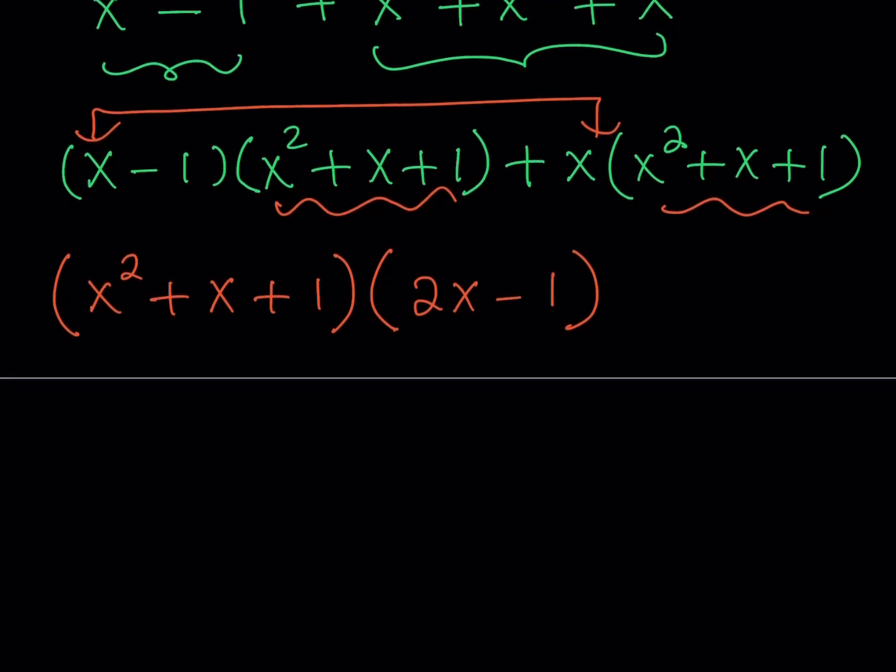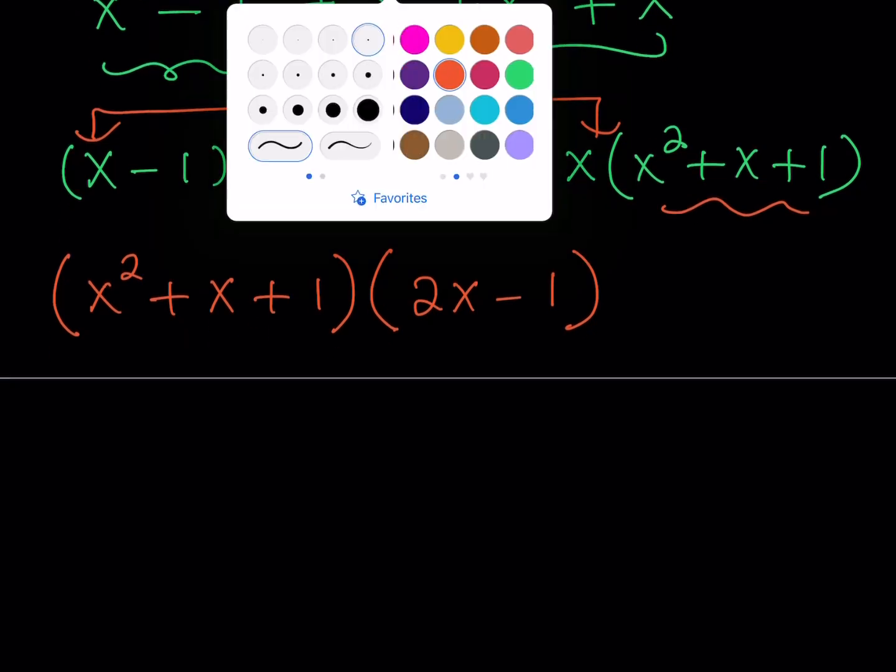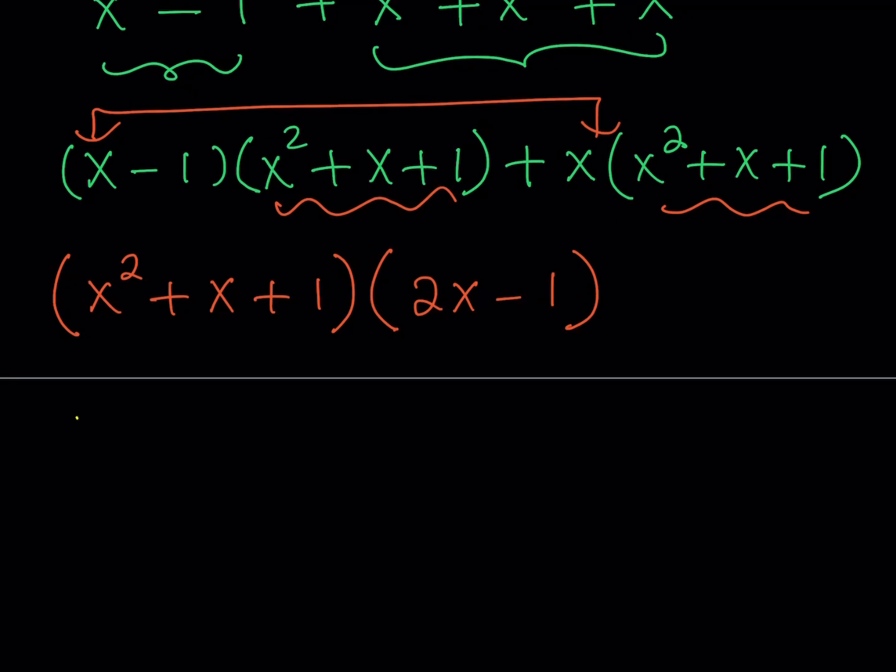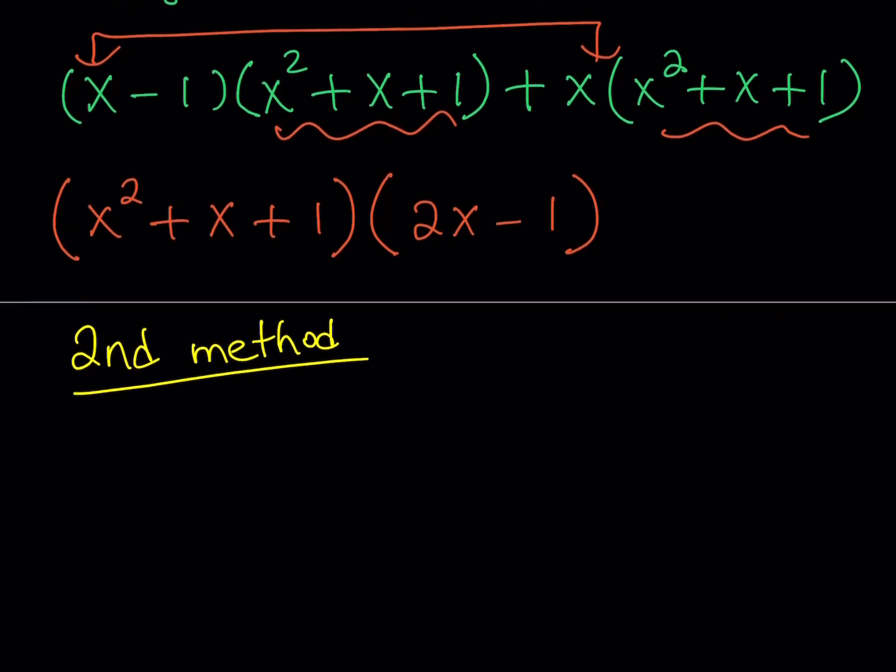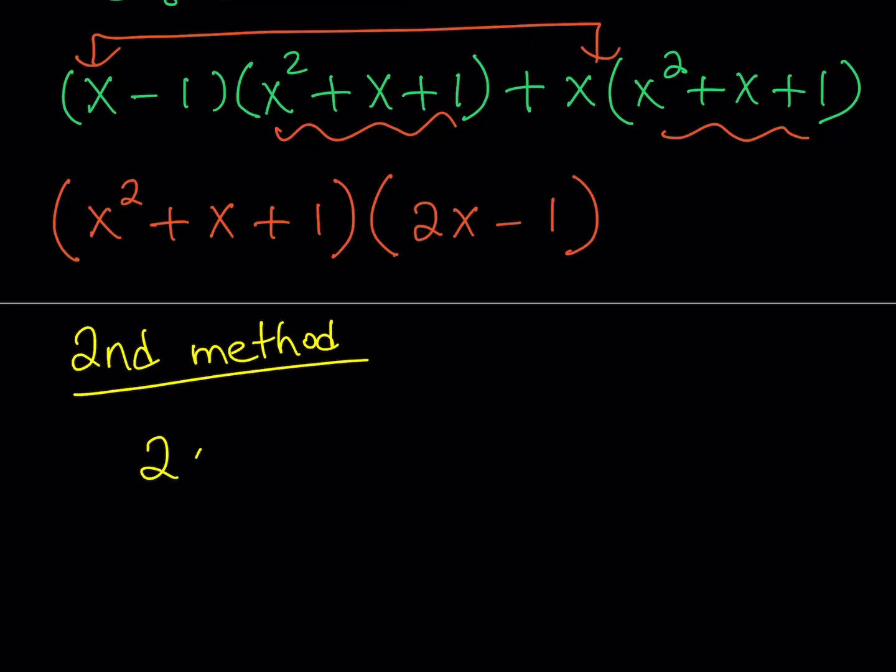Here's the second method. The second method uses a different idea. In the second method, I'm going to go ahead and take my expression. So, here's my original expression: 2x³ + x² + x - 1. This is what I'm trying to factor.